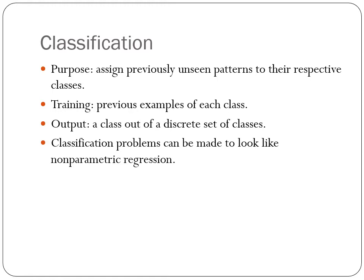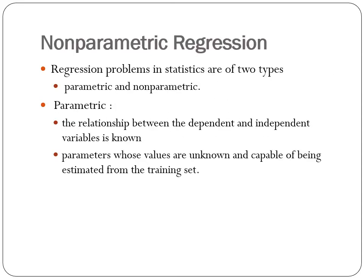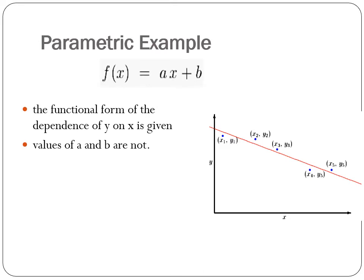Such classification problems can be made to look similar to a non-parametric regression problem. The regression problems which are invariably solved in statistics are of two types: parametric and non-parametric. The parametric model tries to build the relationship between the dependent and the independent variable. The parameters whose values are unknown are capable of being estimated from the data set.